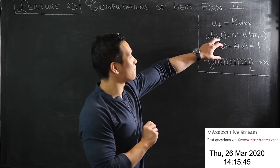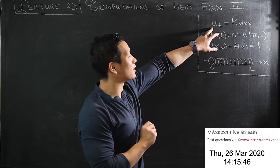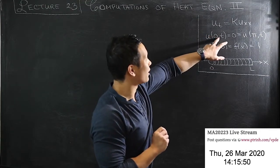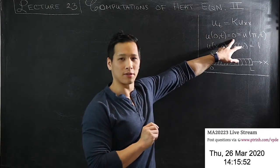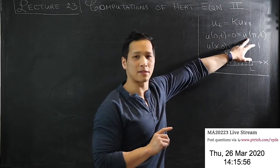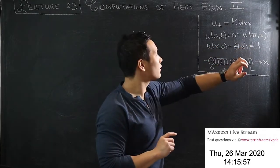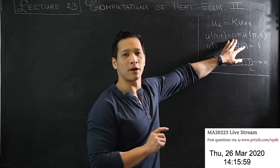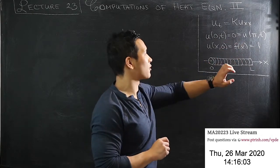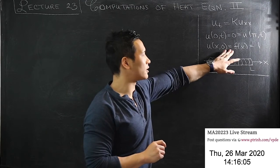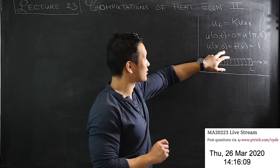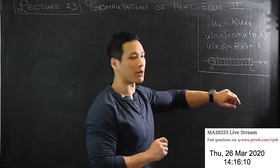We left off last time by looking at the heat equation: u_t equals kappa u_xx. We have Dirichlet conditions on the boundaries at x equal to 0 and x equal to pi, and in this case they're homogeneous boundary conditions, meaning they're 0. We also have an initial condition: at time t equal to 0, the solution is equal to 1.